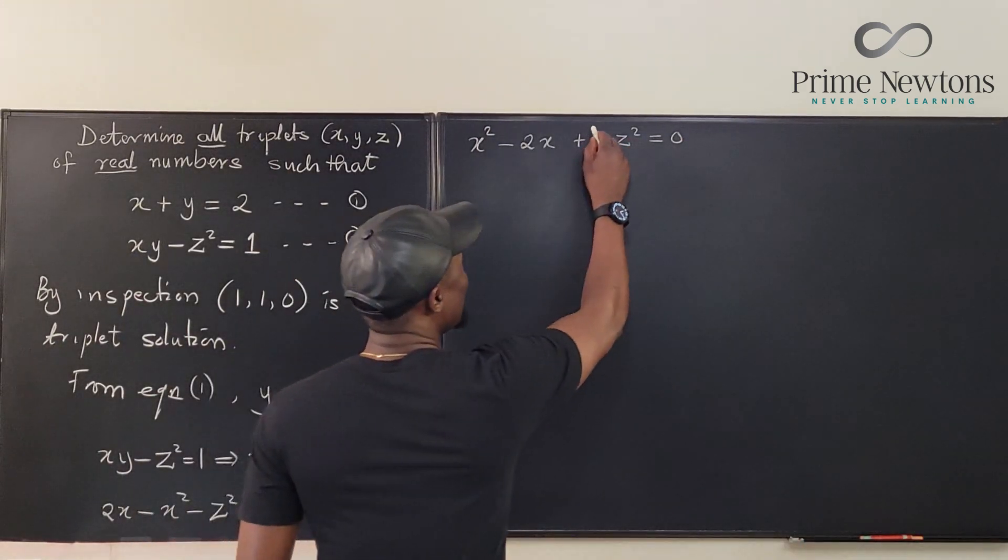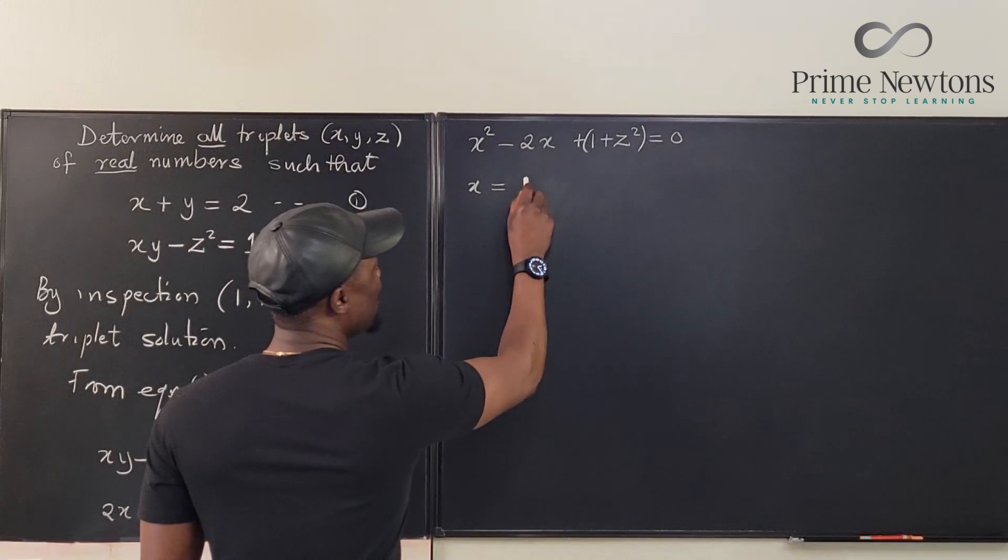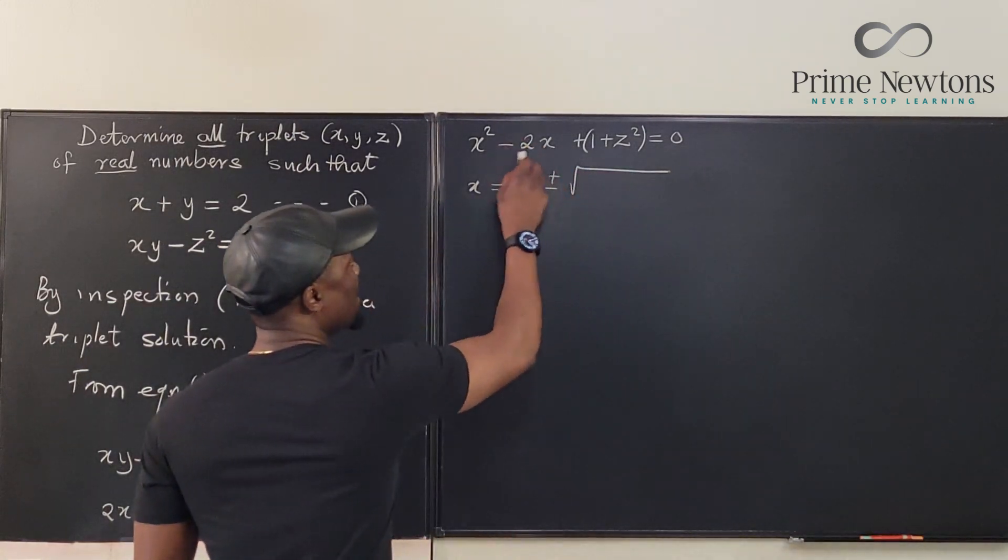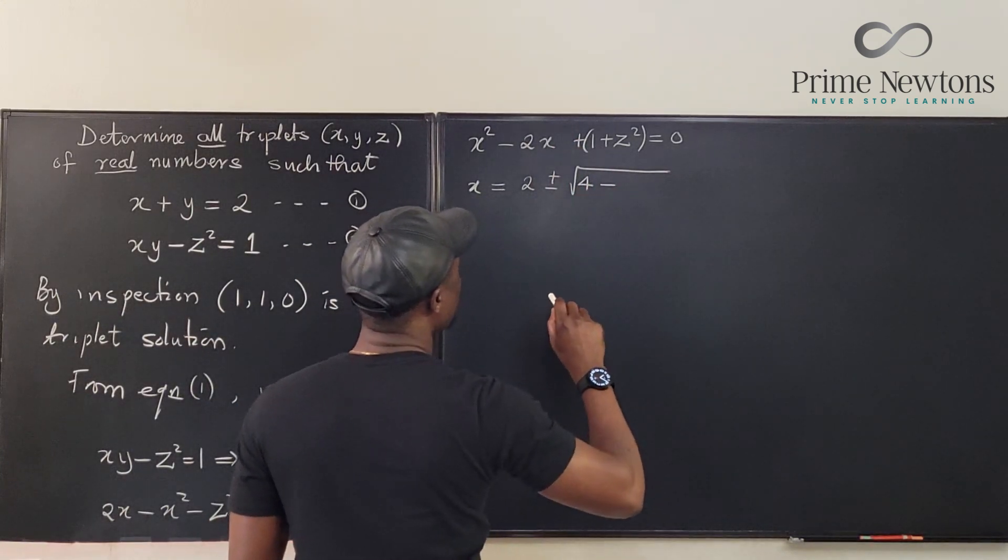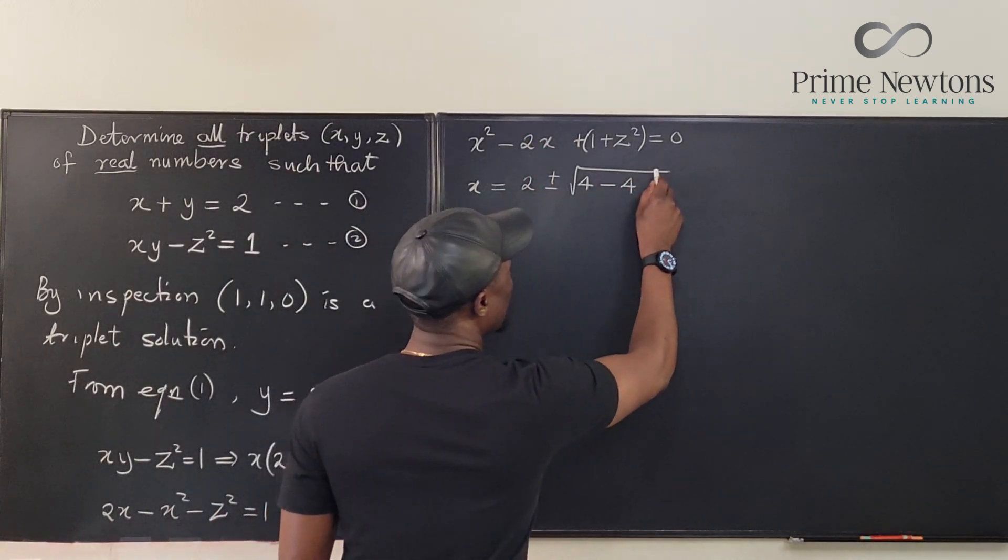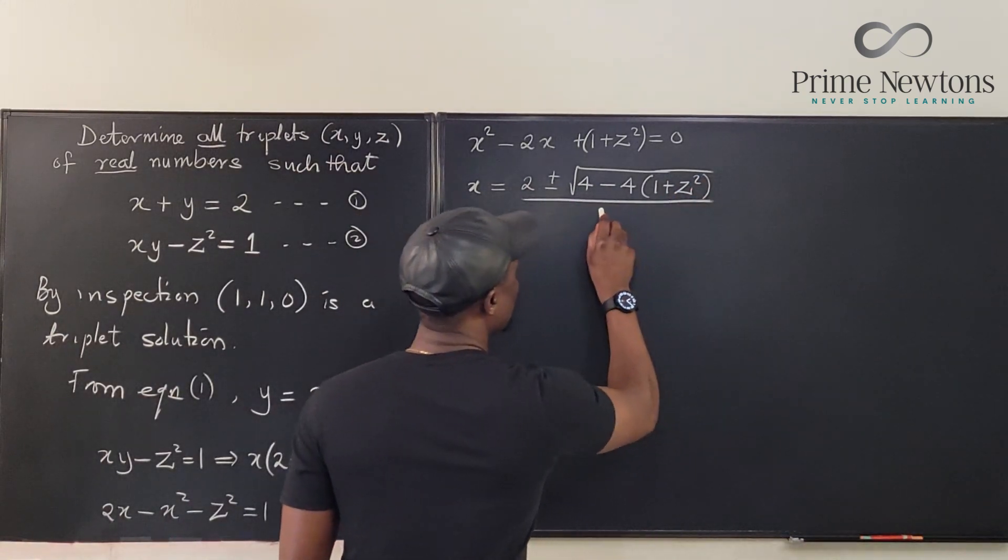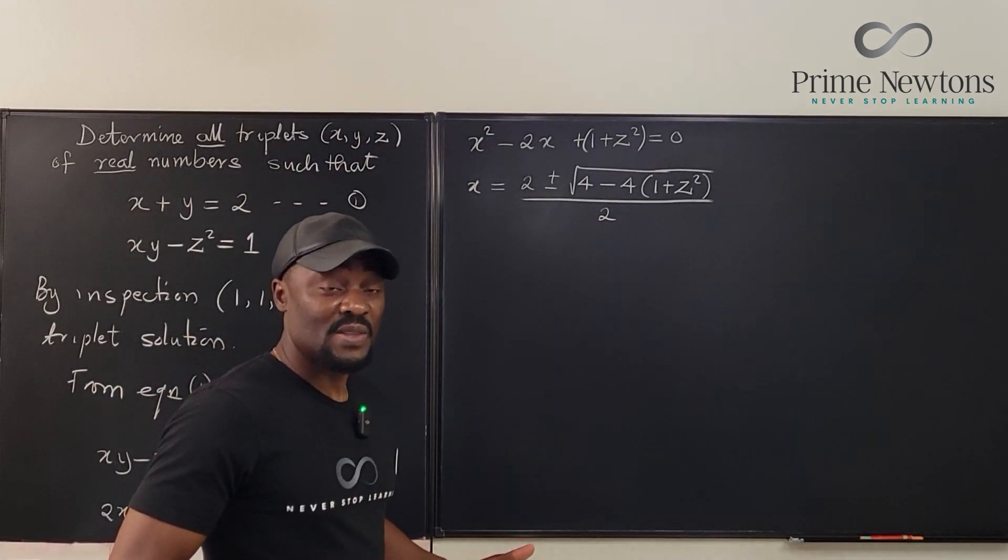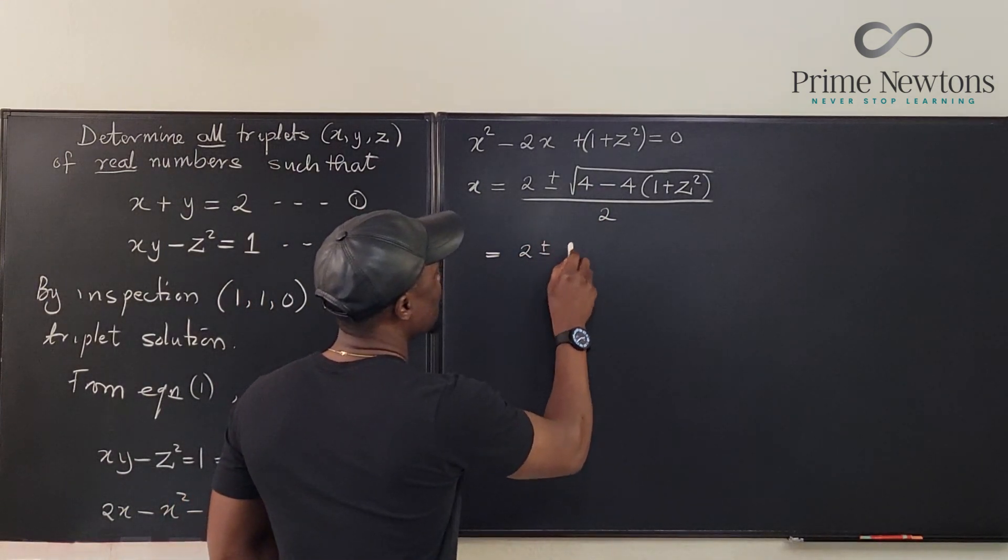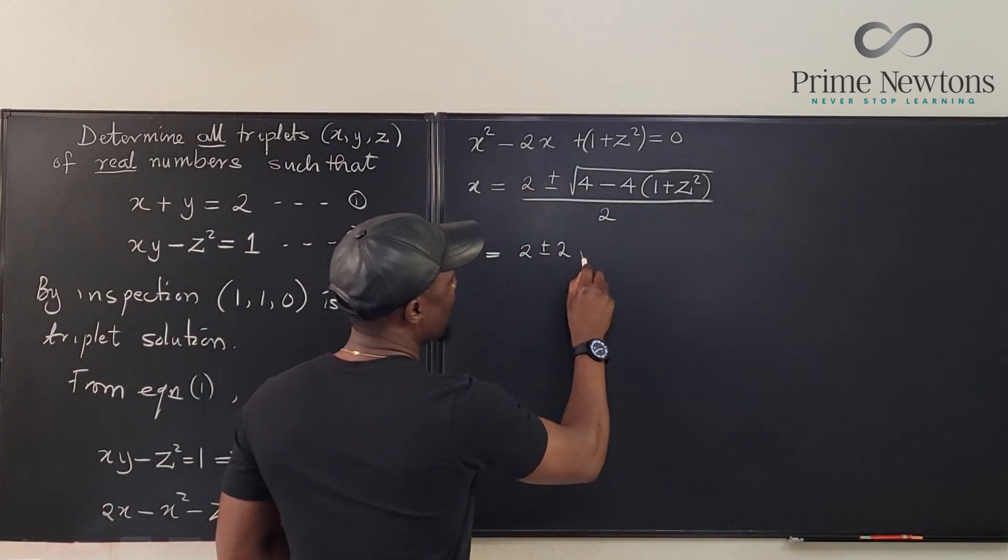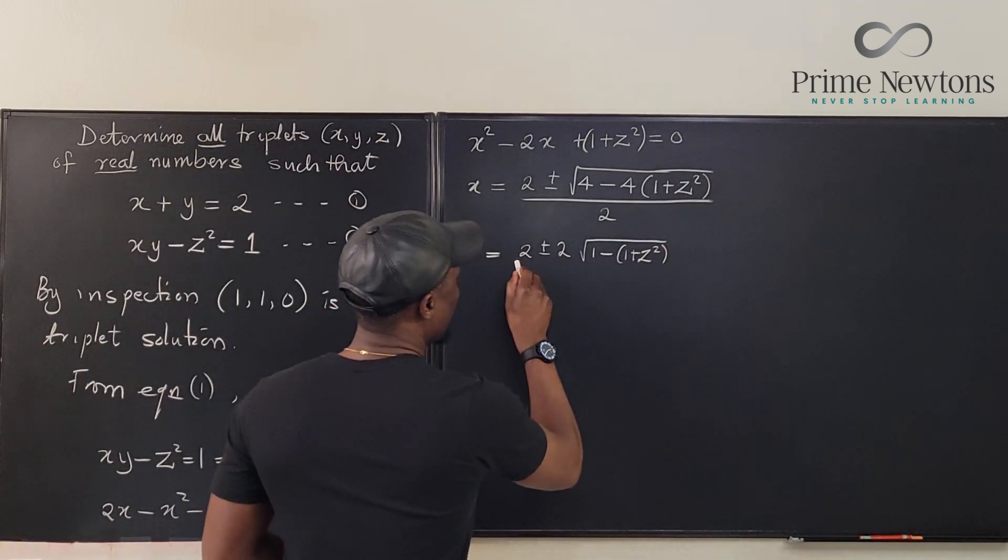We're going to treat this as our c, so we have x, using the quadratic formula, equals minus b, which is going to be 2, plus or minus square root of b squared is going to be 4, minus 4ac. So it's going to be 4 minus 4 times 1 plus z squared, all over 2. I can factor out 4 from in here. It's going to be equal to 2 plus or minus, if you take out square root of 4, it's going to be 2, and then you have the square root of 1 minus 1 plus z squared, divided by 2.